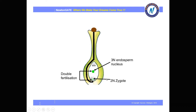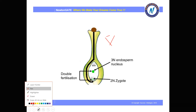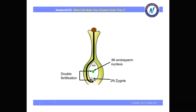Two types of fertilization take place: one male gamete fuses with the egg cell, and another male gamete fuses with the polar nuclei — giving two products. The first is the 3N endosperm nucleus: two polar nuclei plus one male gamete equals 3N. The second is the 2N zygote: one male gamete (N) plus the egg cell (N) equals 2N. That is why double fertilization takes place.